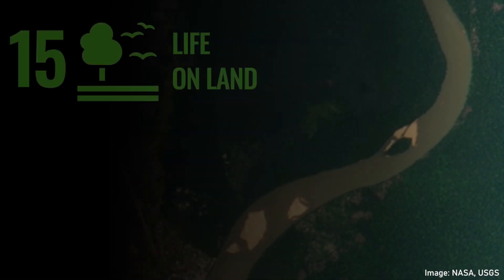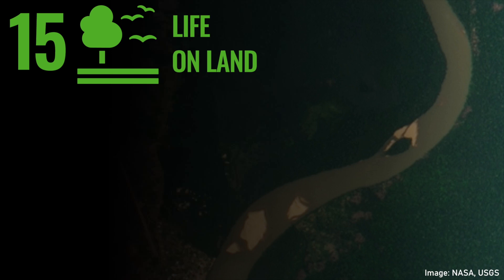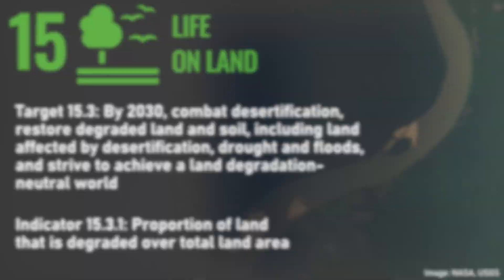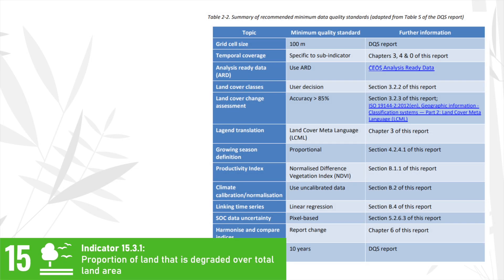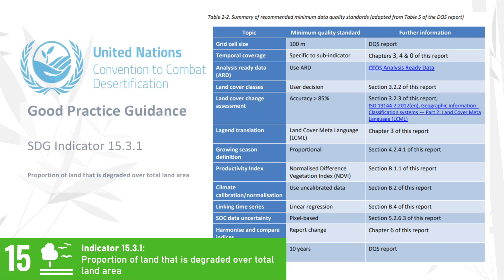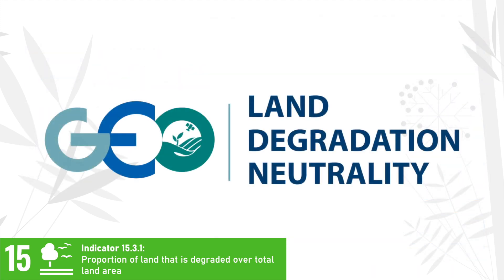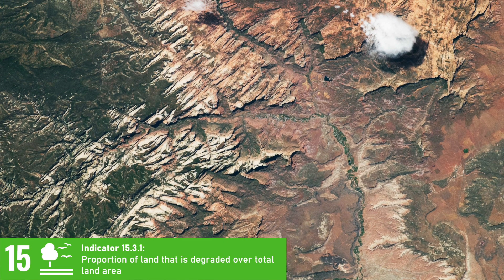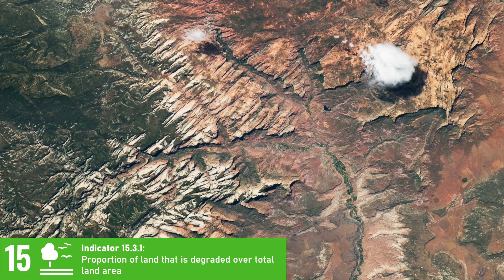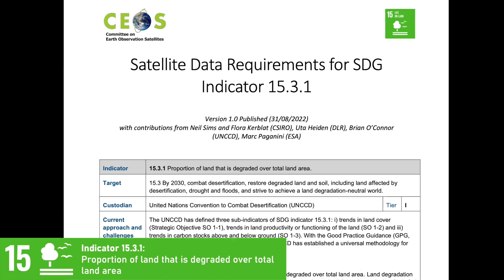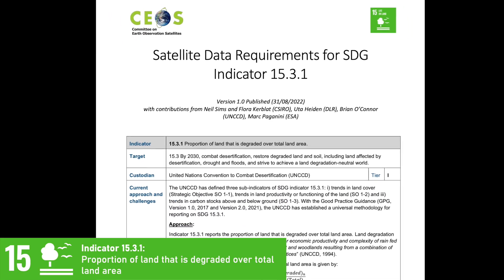For SDG 15, titled Life on Land, SEOS focuses their efforts towards target 15.3, providing support for measuring the extent of land degradation using Earth observation. In 2021, SEOS provided updated satellite dataset recommendations, consistent with the UN Convention to Combat Desertification's Good Practice Guidance reports, referencing the SEOS Analysis Ready Data Framework. SEOS is also working closely with the GEO Land Degradation Neutrality Initiative to address emerging data and analytics needs identified during recent SDG reporting processes. In August 2022, SEOS published the Earth Observation Support Sheet for this indicator.